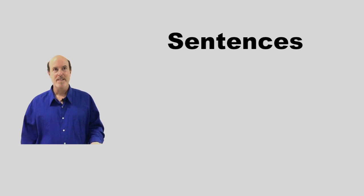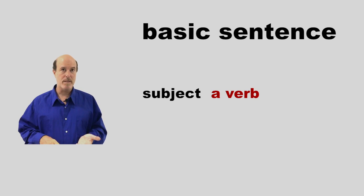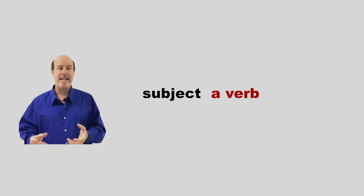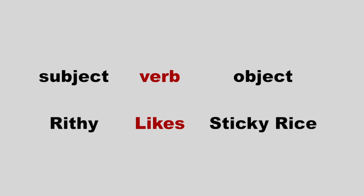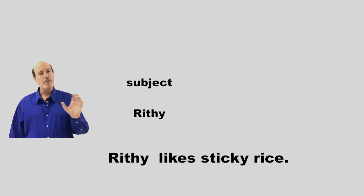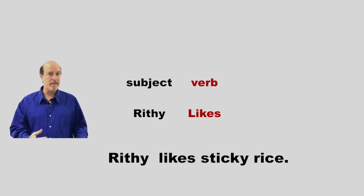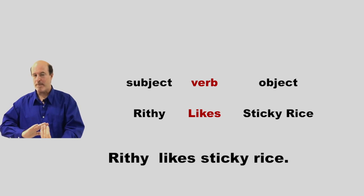A basic simple sentence is going to be a subject — in Khmer, brotin bat — a verb, karyasap, and an object, kamabat. So let's try an example: Riti likes sticky rice. In Khmer: Riti juljat bai damnaab. In that sentence, the subject is Riti — Riti is the one doing the liking, the action. The verb is liking, which is an action: to like, to walk, to jump. So the object must be sticky rice — sticky rice is liked by Riti. That's the object.